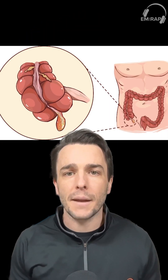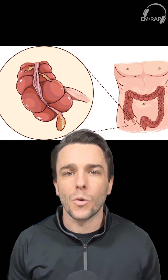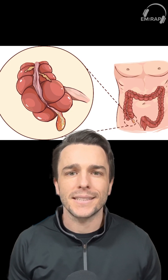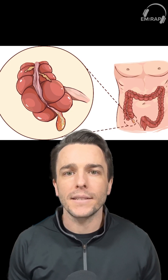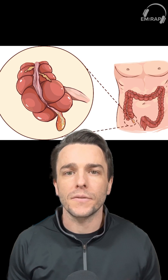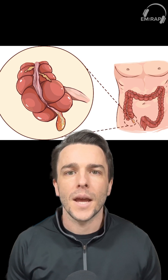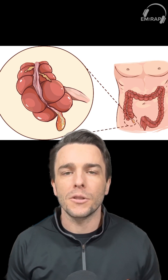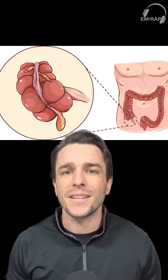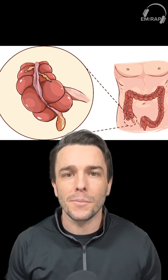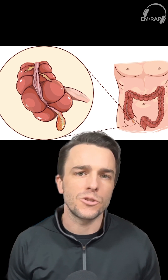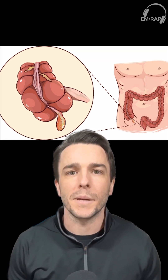In terms of anatomy, you have to know normal to know abnormal. The appendix itself arises from the posterior medial surface of the cecum, about two to three centimeters below the ileocecal valve. Its length is highly variable, ranging from two centimeters to 20 centimeters.